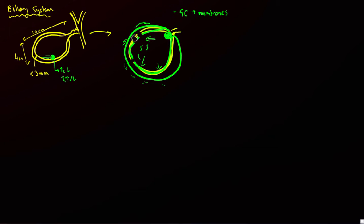Associated with gangrenous cholecystitis is full-thickness perforation or defect within the gallbladder wall, extending through to the serosal surface. This results in perforated cholecystitis, typically associated with an abscess.